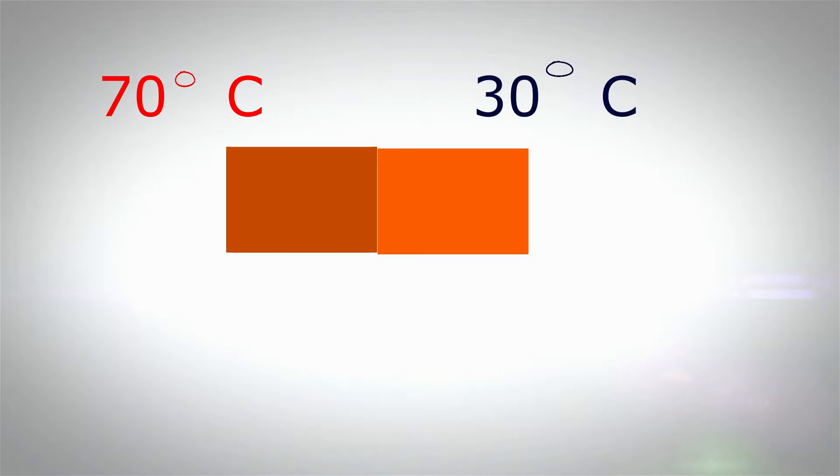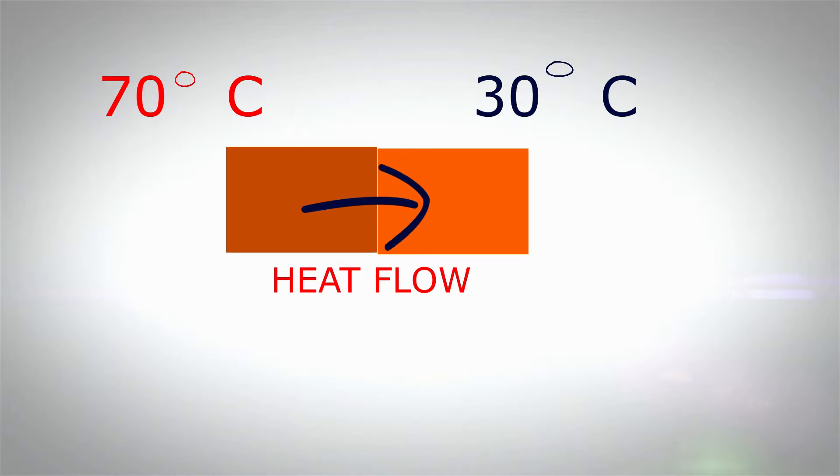Why do we feel hot and why do we feel cold? Why do we feel hot when we touch a hot cup of tea? Why do we feel cold when we touch an ice cube? This is because heat energy flows from a body at higher temperature to a body at lower temperature. For example, if one object is at 70 degrees and another is at 30 degrees, the heat will flow from the 70-degree object to the 30-degree object.